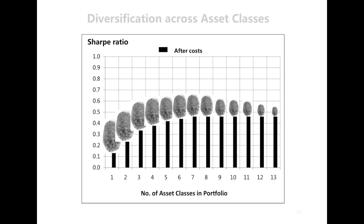There's a point at which additional costs start to outweigh the efficiency gains. Thus, in practice, it's best to stop at about seven or eight asset classes when building a diversified portfolio.